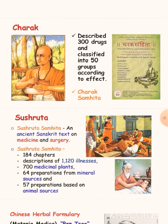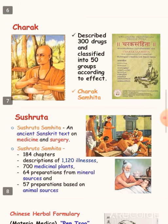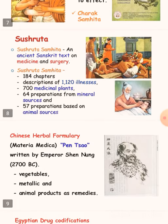Charaka wrote the Charaka Samhita, which described 300 drugs classified into 50 groups according to their effect. Sushruta wrote the Sushruta Samhita, an ancient Sanskrit text on medicine and surgery.